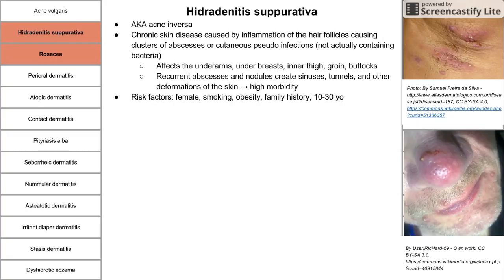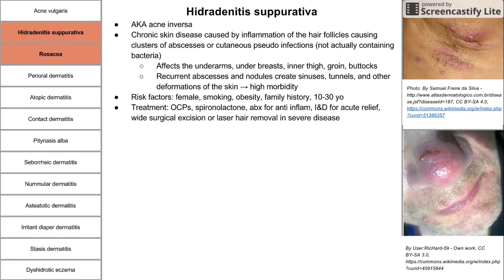Risk factors for acne inversus include being female, smoking, obesity, family history of HS, and it usually starts between ages 10 to 30. Treatment includes oral contraceptives, spironolactone — an aldosterone and testosterone inhibitor that reduces hormonal effects — antibiotics for their anti-inflammatory effects, and incision and drainage for acute relief. For severe cases, wide surgical excision or laser hair removal may be considered.